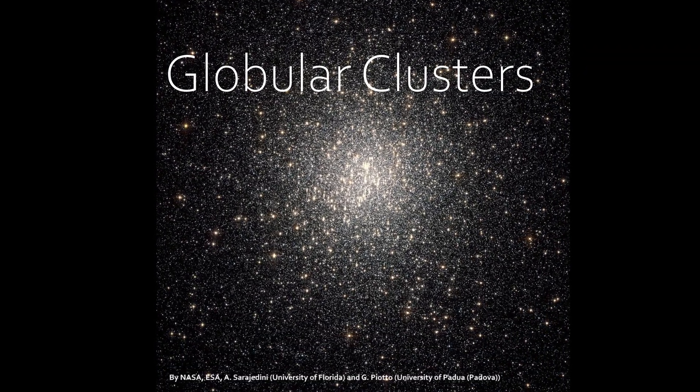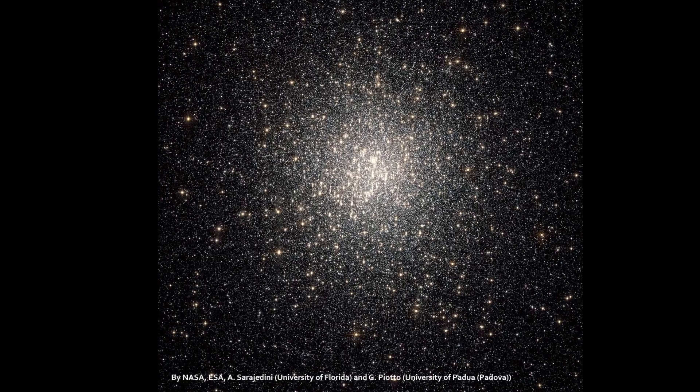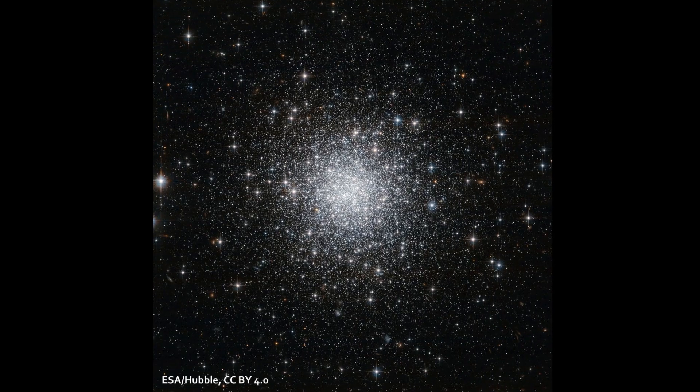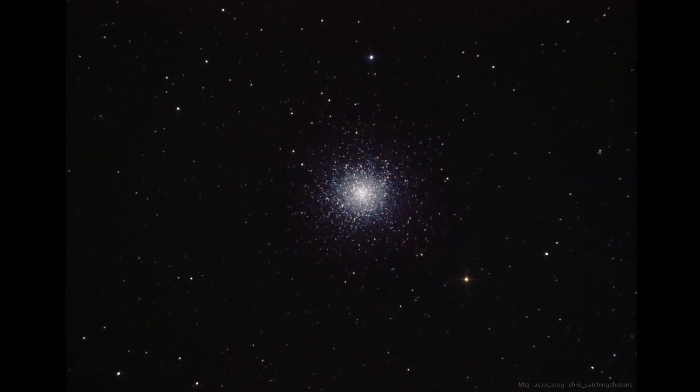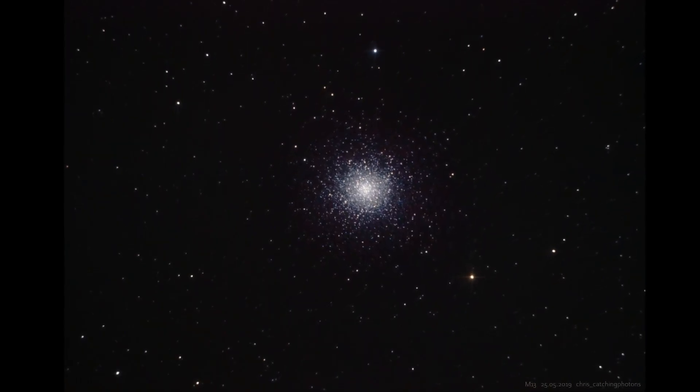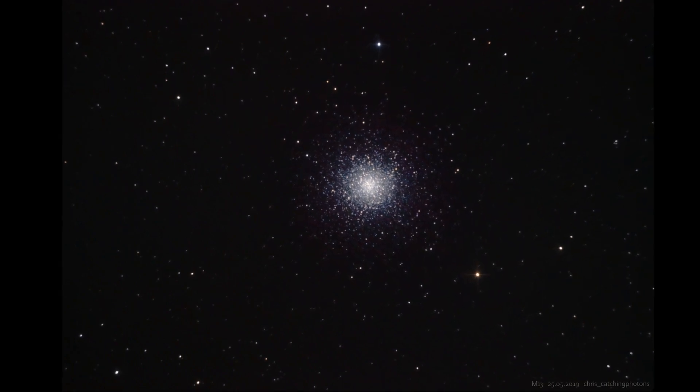The second type are globular clusters. They are still kind of a mystery to astrophysicists. They are much denser than open star clusters and the gravitational pull of the stars themselves give them a spherical form. The star density in the center of globules can be enormous.